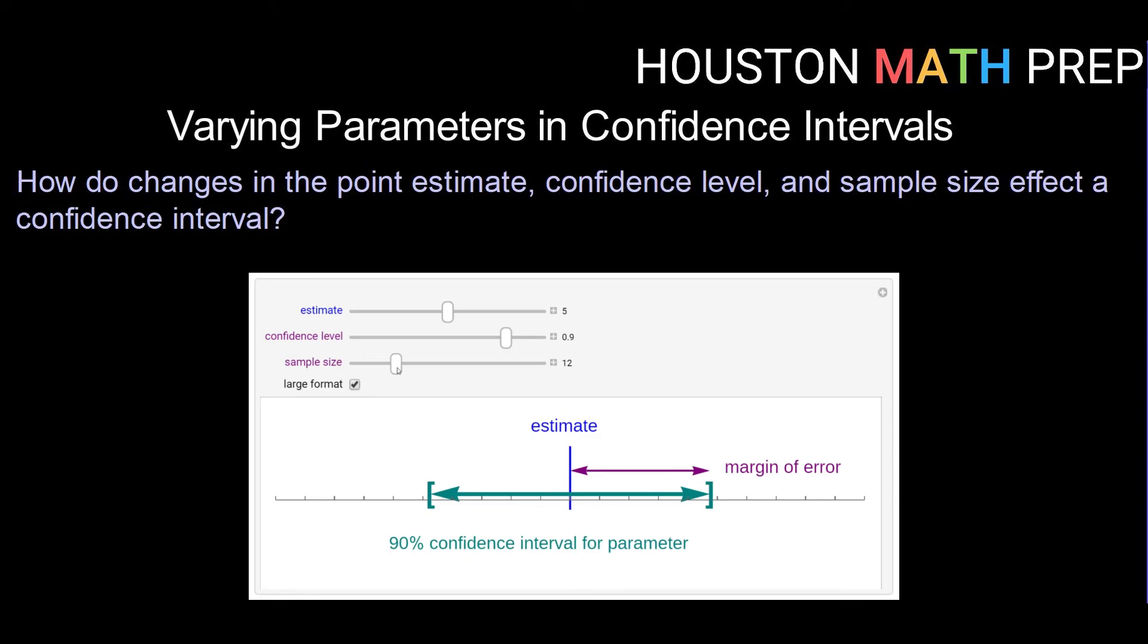If we increase our sample size, then our margin of error and our confidence interval will start to shrink because our distribution around our estimate is smaller and smaller.